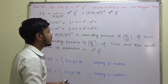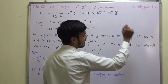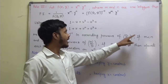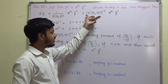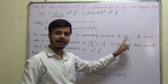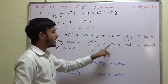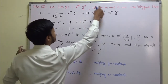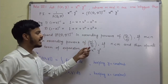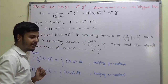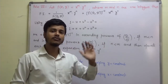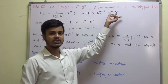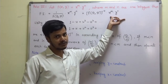If m is less than n, then I will expand this function in ascending powers of D by D-dash, and if n is less than m, then I am going to expand this term in ascending powers of D-dash by D. After getting the expansion, we are going to operate each term of the expansion on the function x to the power m into y to the power n.